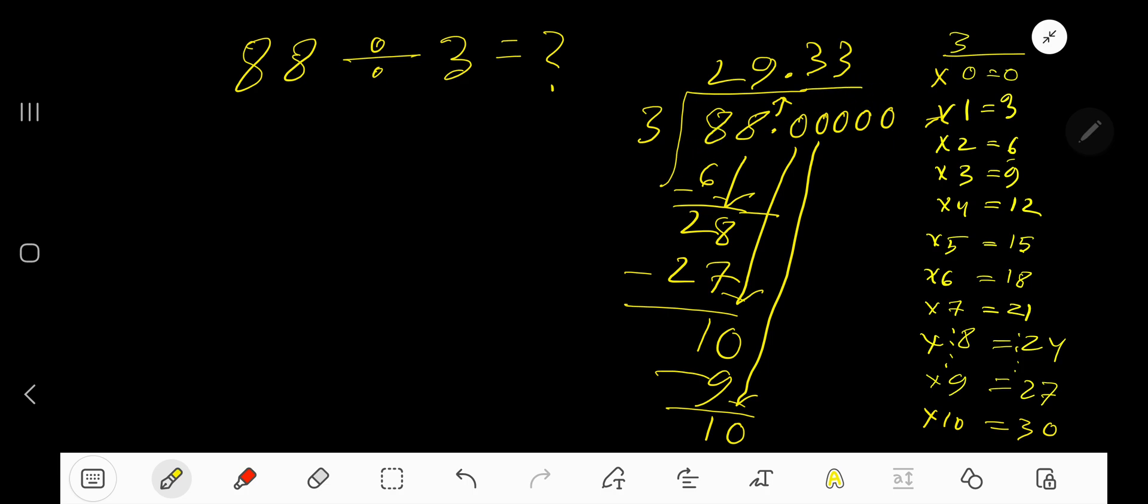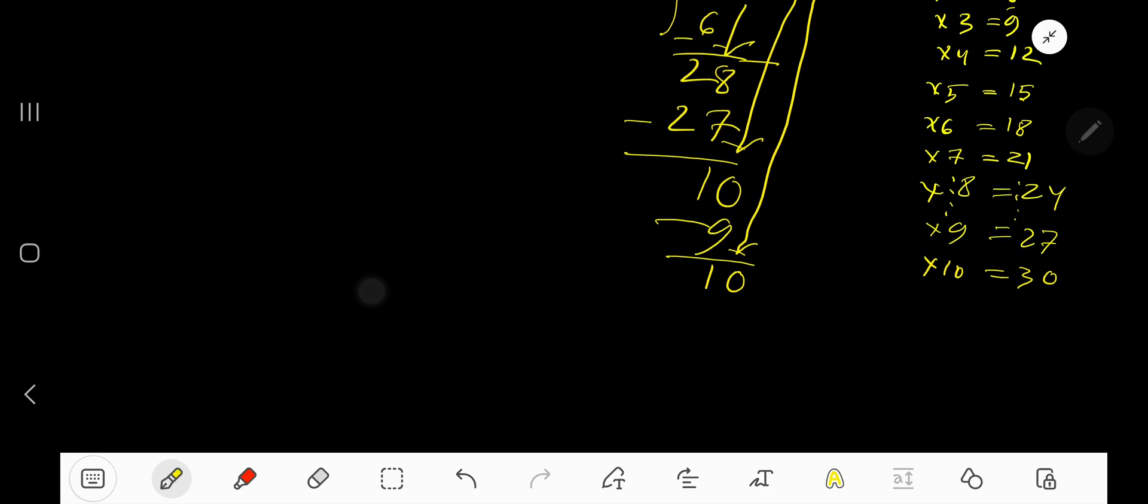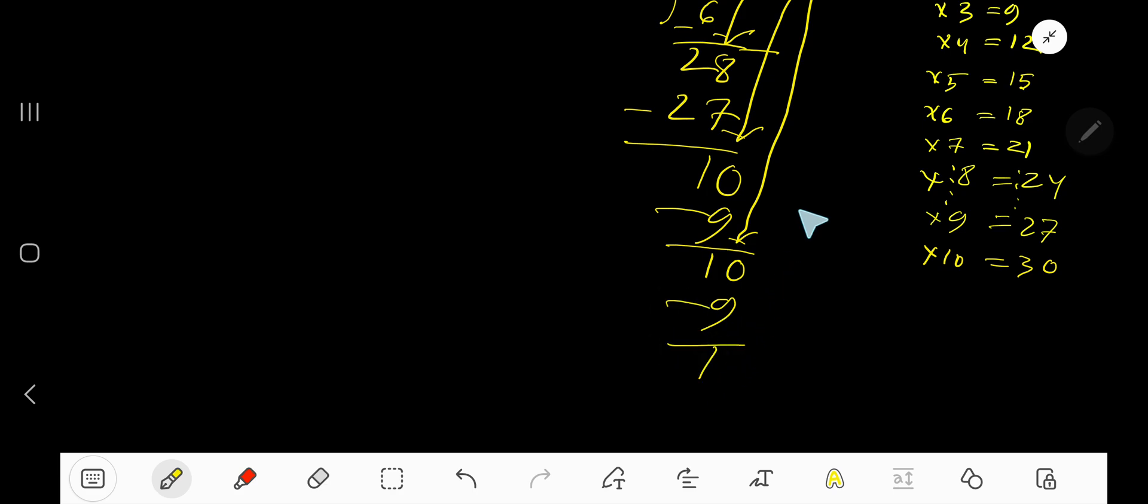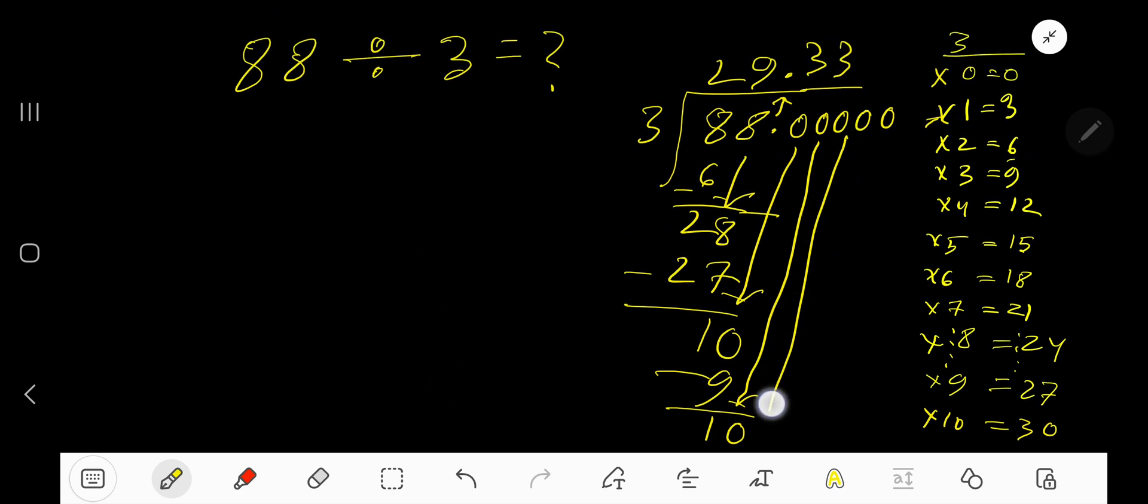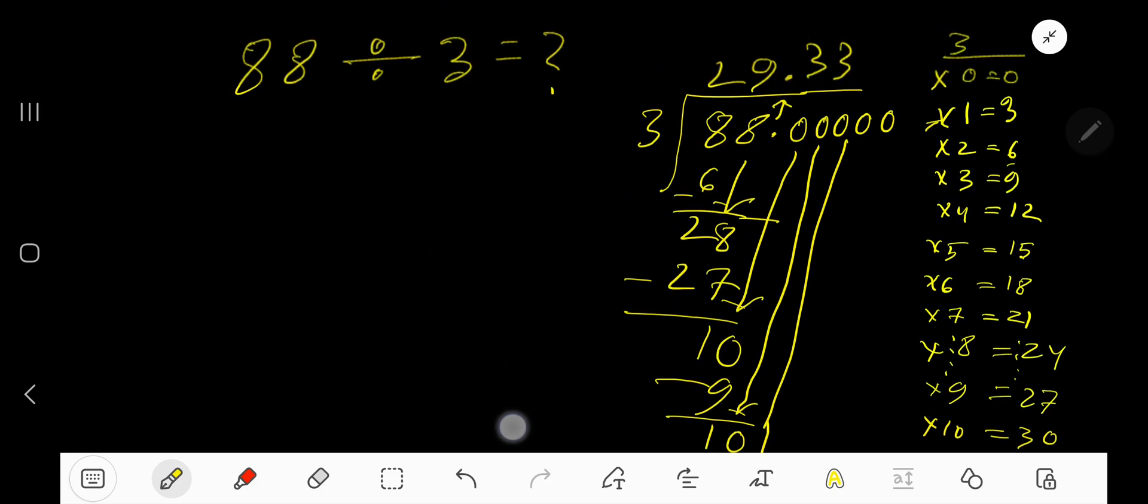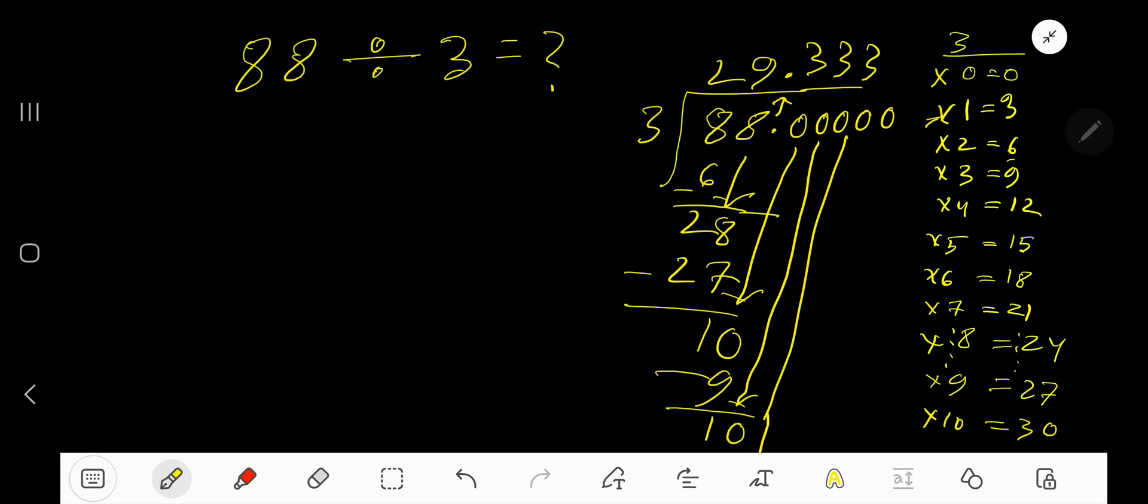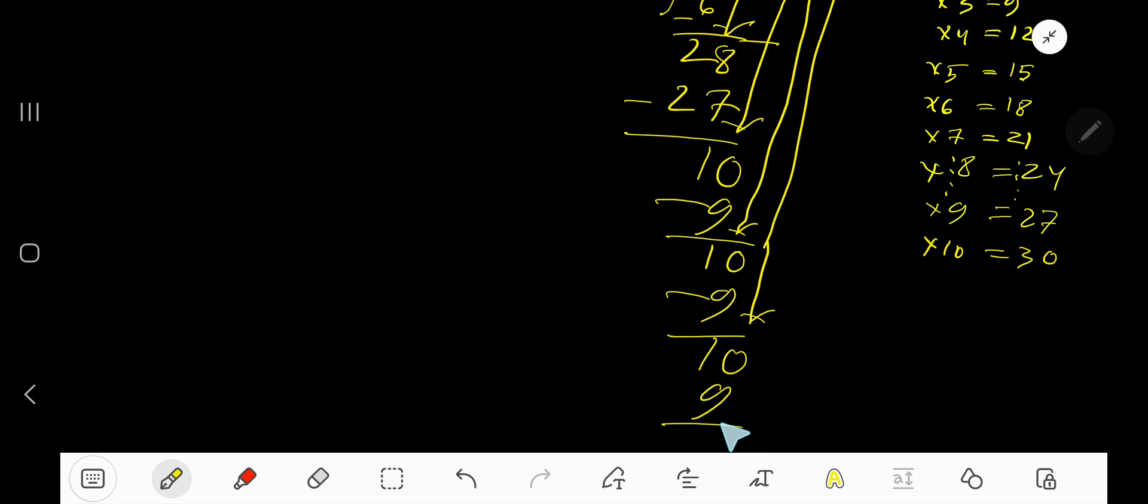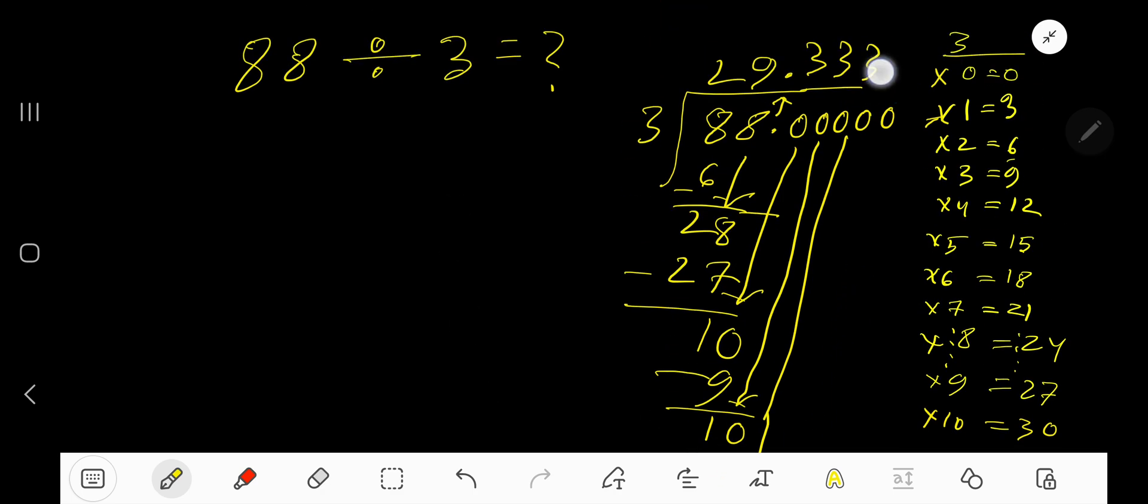You can bring down more zeros, but since this process is continuing, now place 3 dot here. So 29 point 3 3 3 3 dot dot dot is your answer.